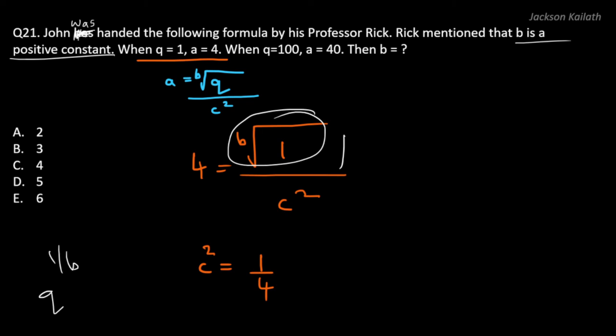Now the next piece of information given over here is Q is equal to 100 when A is equal to 40. So let's substitute these values over here. So for A we will put 40 and for Q we will put 100. So we have 40 is equal to Bth root of 100 divided by C square. Now if I take C square to the left hand side I can write this as C square into 40 is equal to Bth root of 100, and we know that C square is equal to 1 by 4.